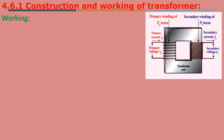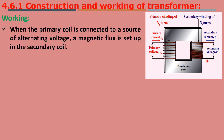Now we shall see the working of a transformer. A transformer has a primary coil of Np turns and a secondary coil of Ns turns. The current flowing through the primary coil is Ip, and through the secondary coil is Is. The voltage applied to the primary coil is Vp, and the voltage drawn from the secondary coil is Vs.